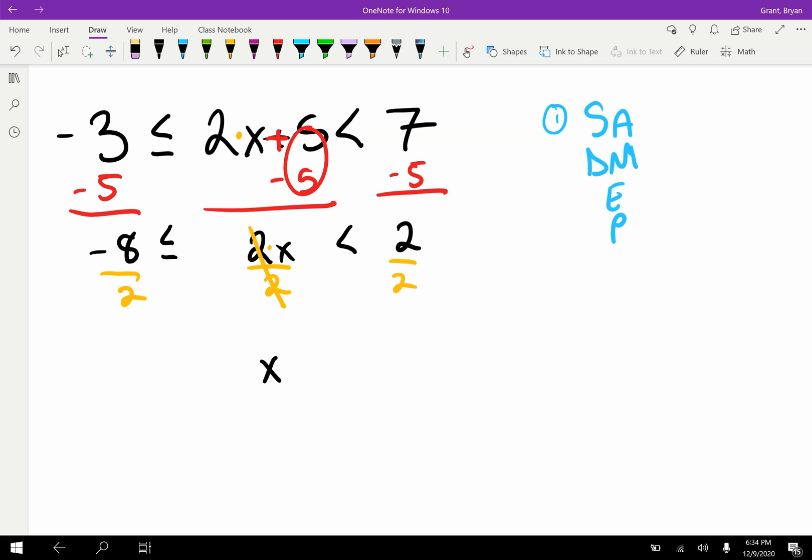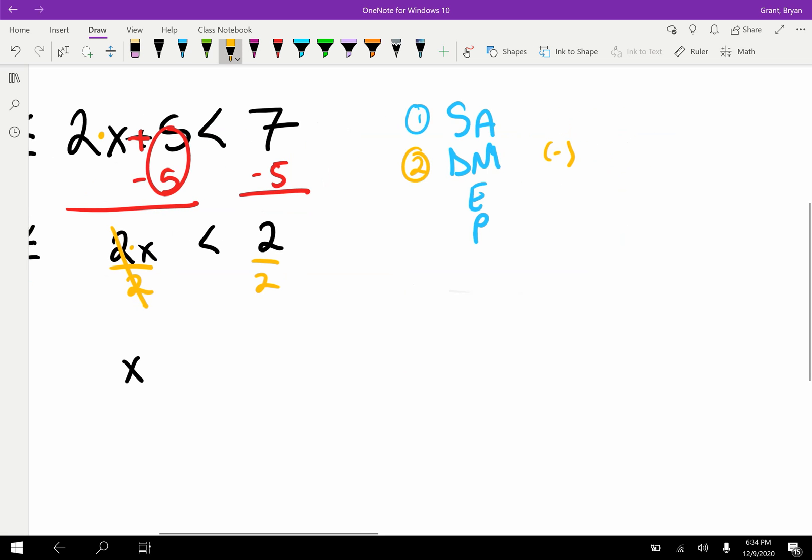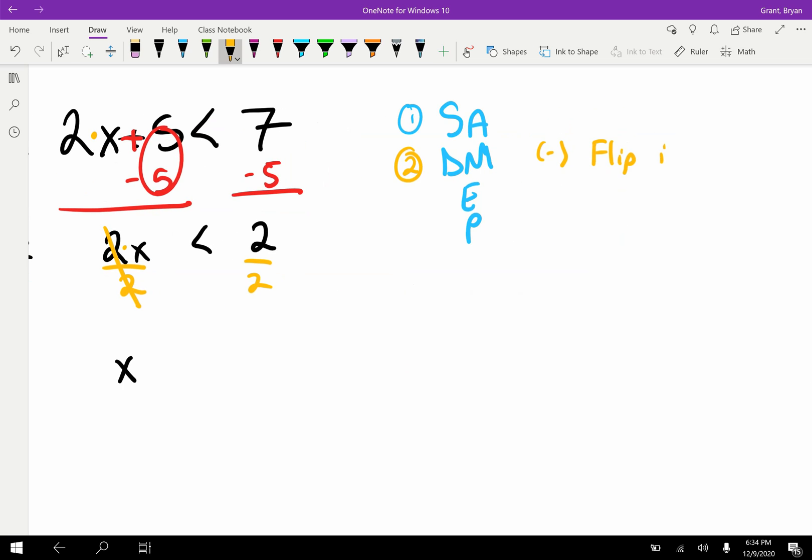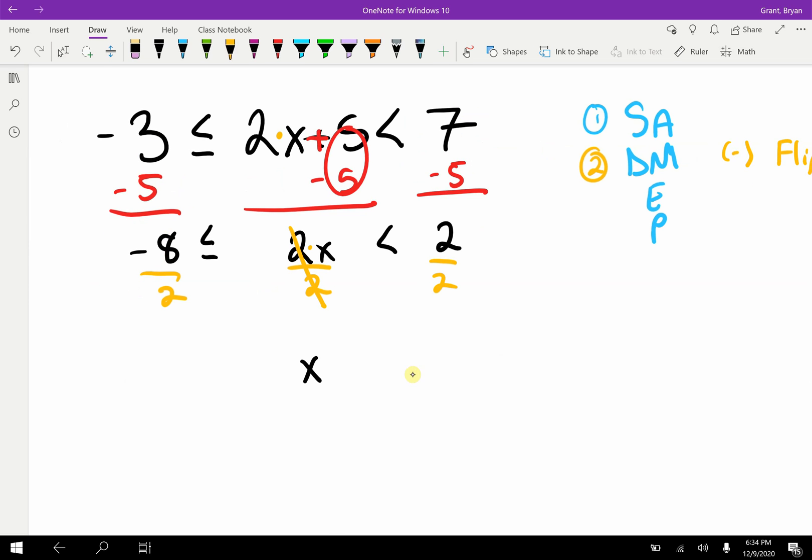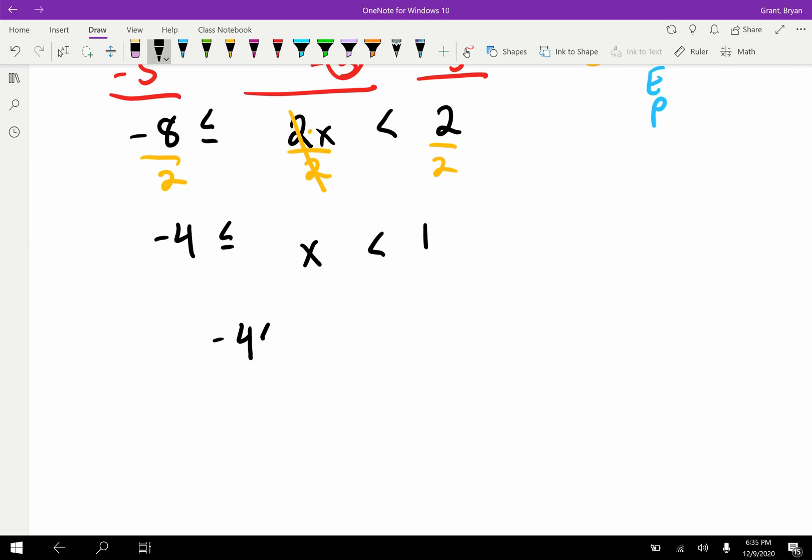Before I write these inequality symbols, we should be asking, do we have to flip these inequality symbols? In this case, no, we don't, because you only flip those inequalities in the case of a negative number. If there's a negative involved, if you're multiplying or dividing by a negative, you do have to flip the inequality. But we divided by positive two. It doesn't matter that this is a negative eight. It's the number we're operating by, so we don't need to flip these. This is the algebraic solution to our answer.